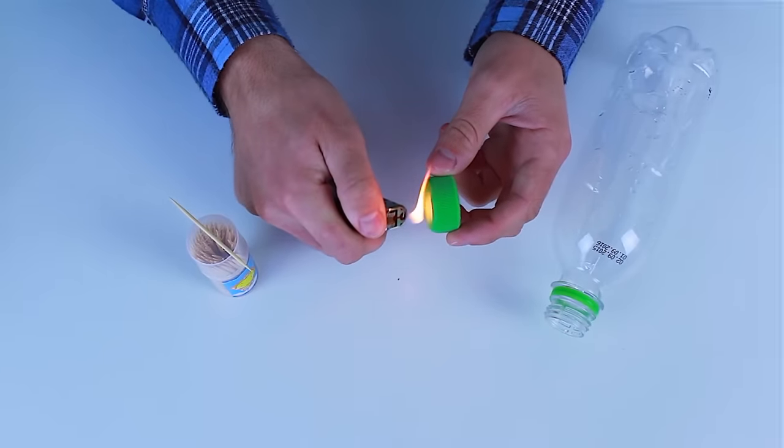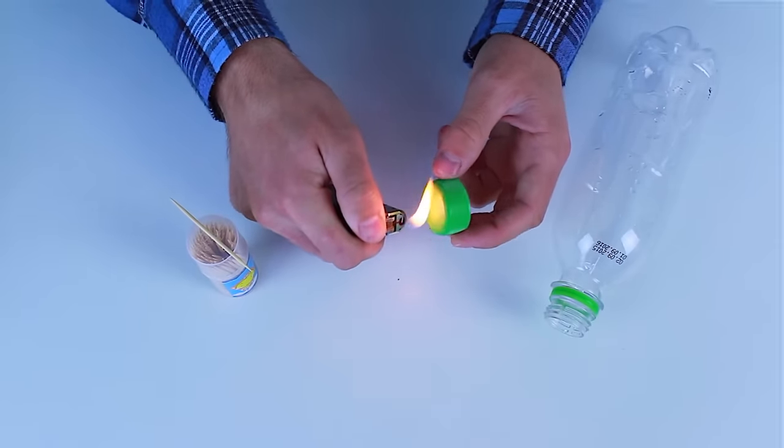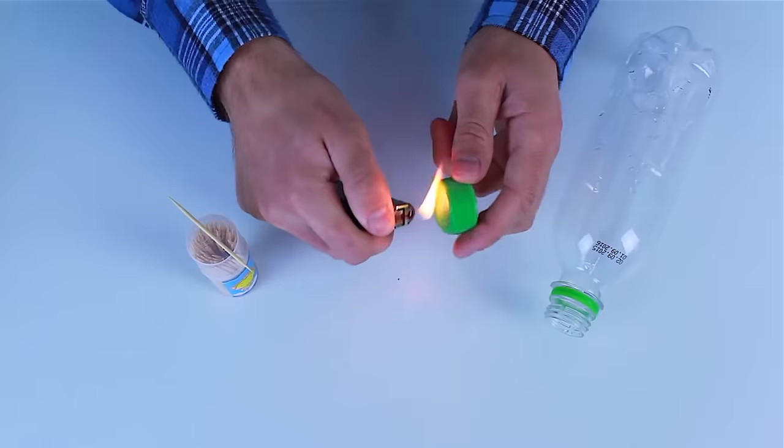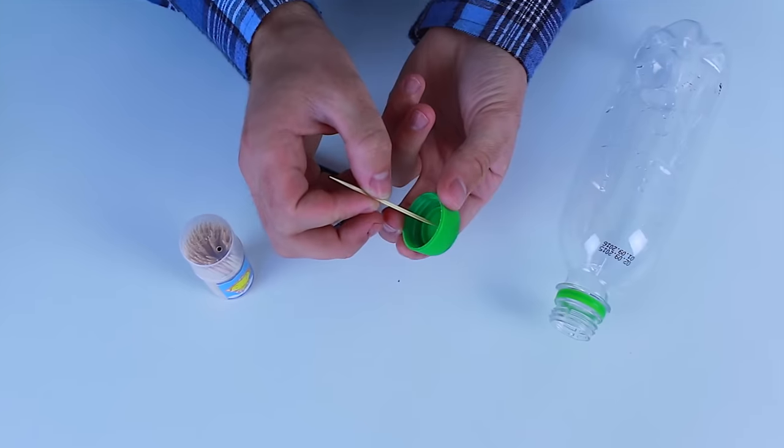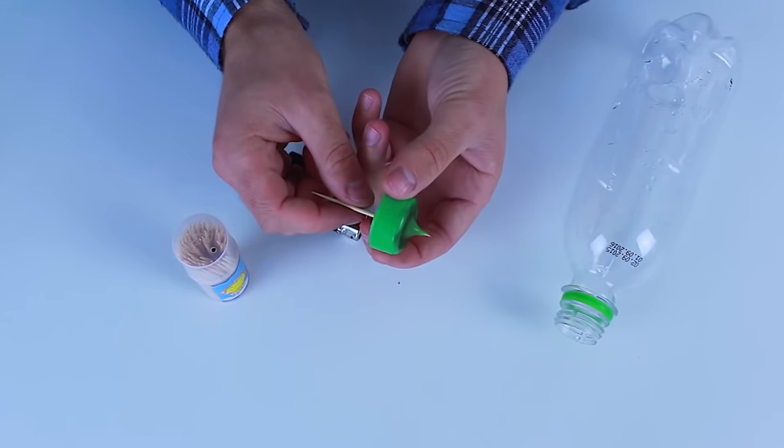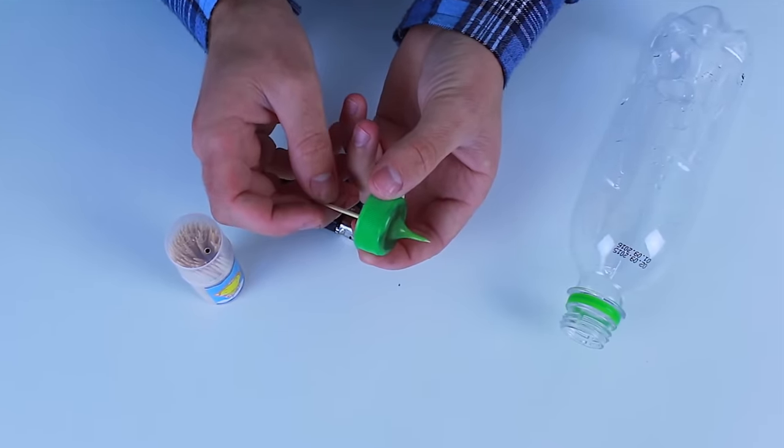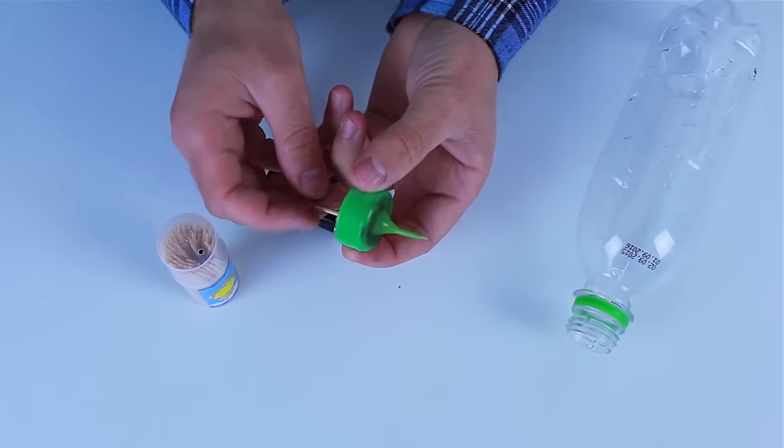Firstly, we should unscrew and heat the lid of the plastic bottle. As soon as the plastic becomes soft enough, you should take a toothpick and start carefully piercing the lid from the inside. Do it very slowly, otherwise you're just going to pierce the lid through.